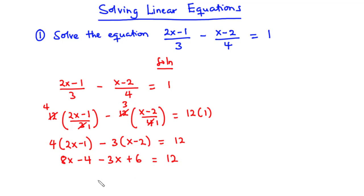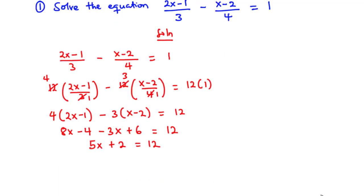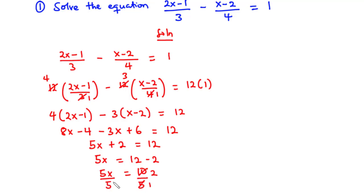Now let's simplify like terms. 8x minus 3x is 5x, and negative 4 plus 6 is 2, so we have 5x plus 2 equals 12. We transpose 2 to the right hand side: 5x equals 12 minus 2, which gives 5x equals 10. Dividing through by 5, we get x equals 2. So the value of x for this particular equation is 2. Let's move on to the next question.